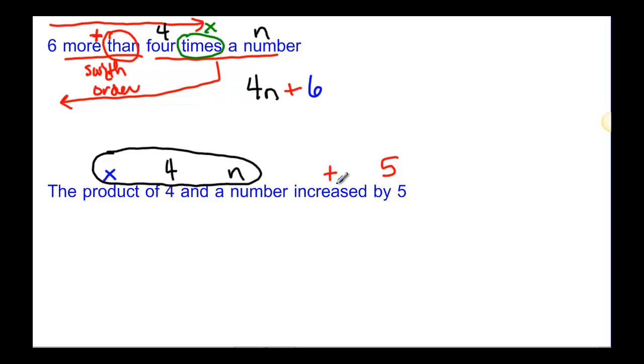All right, so we increase by five, same order. So how do we write the product of four and n? We would have four and a number. Four times n is just four n. Increased, plus, and then our five.